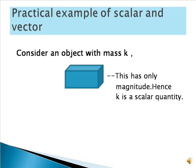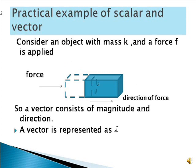Now, let us see a practical example for scalar and vector. Consider an object with mass k — this has only magnitude, hence k is a scalar quantity. Now consider applying a force to that object. The object tends to move, so it has a magnitude and also moves in a direction. Hence, force is a vector.